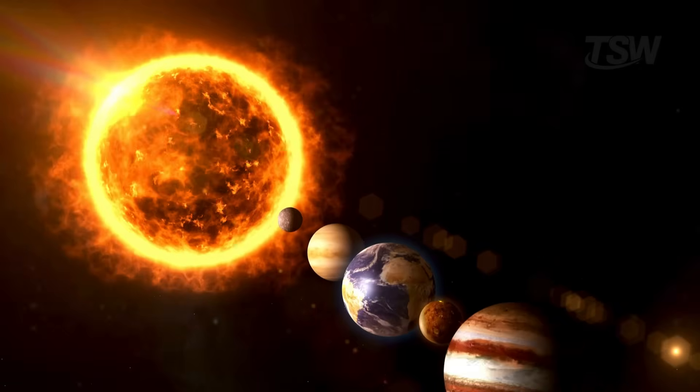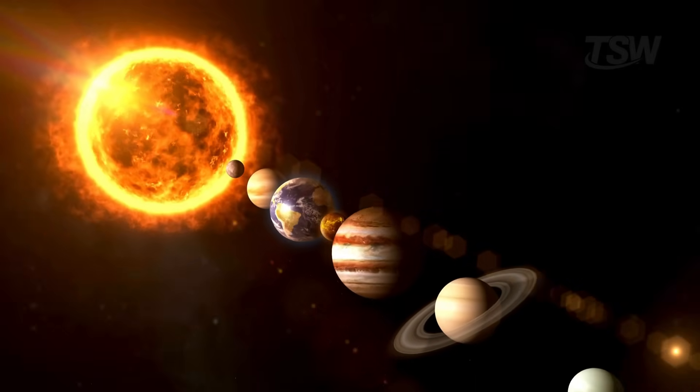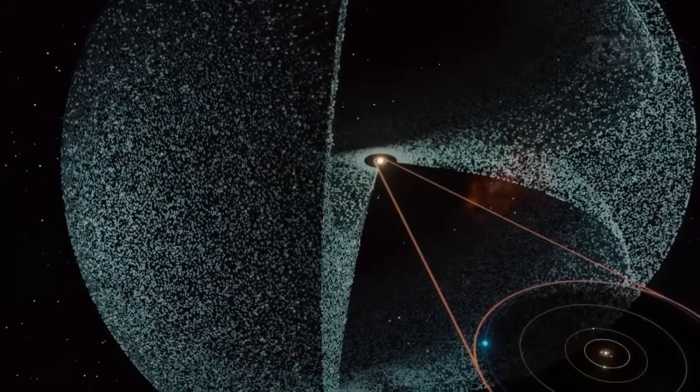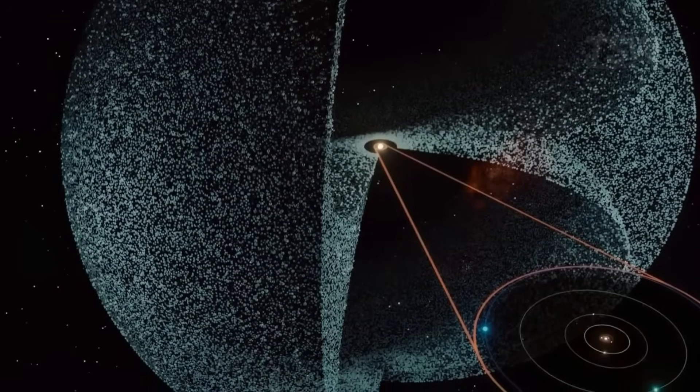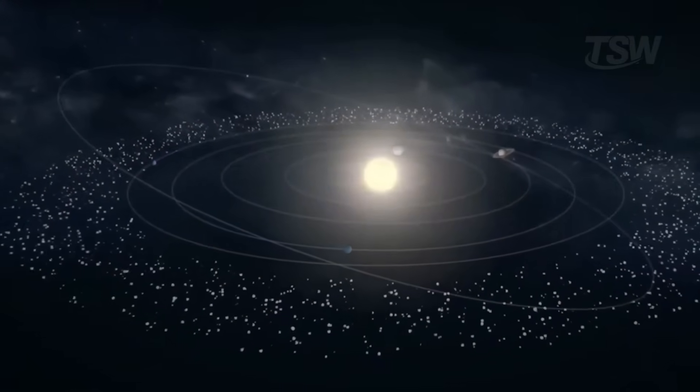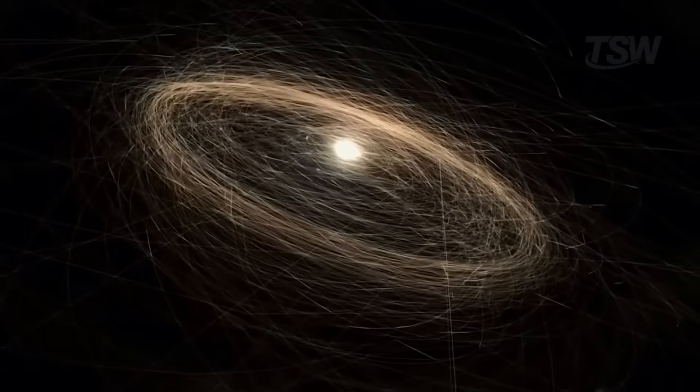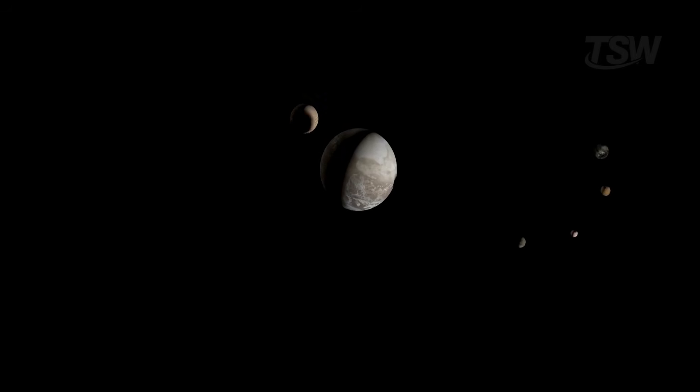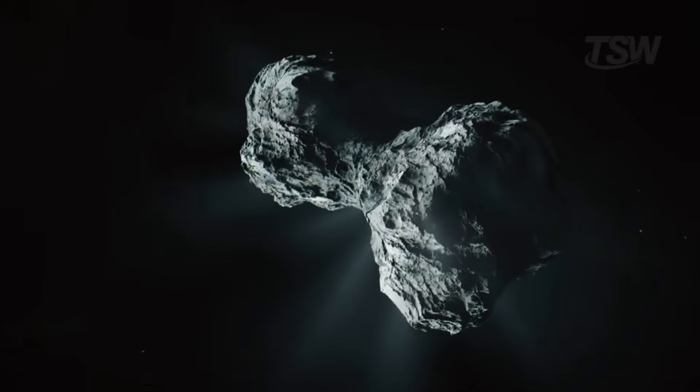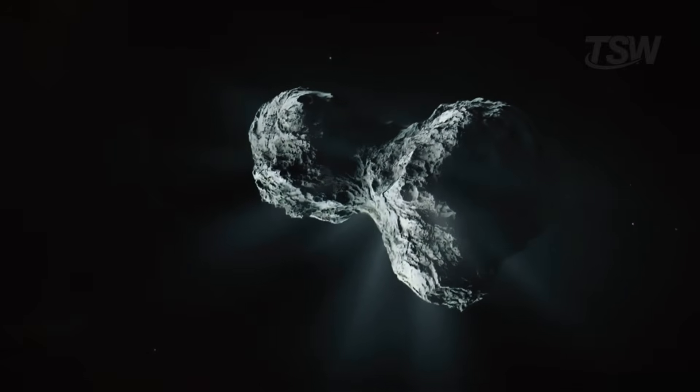For a long time, we were taught that the solar system was an organized place. Eight planets orbiting the sun, each with a predictable path. But reality is far more chaotic, fascinating, and alive. There's a multitude of celestial bodies beyond Neptune, with characteristics as varied as they are surprising. Some with unexpected rings, others with slowly evaporating atmospheres, mysterious moons, abnormal rotations, and orbits that defy our understanding. And all of them are silently telling us that we still know very little.